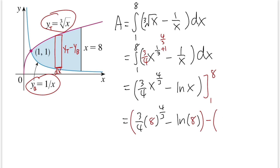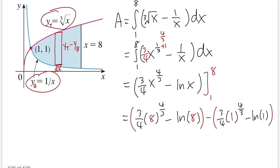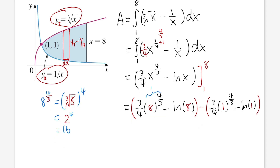Plugging in 1: we have 3/4 times 1 to the 4/3 power, minus ln 1. Now let me explain 8 to the 4/3. For a rational exponent, the denominator becomes a cube root: take the cube root of 8 first, which is 2, and then raise that to the 4th power to get 16.